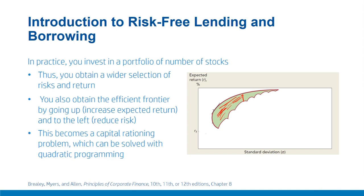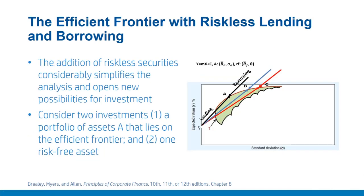In this feasible region, you want to go up to increase expected return for a given level of risk, or go left to decrease risk for a given level of return. This gives you the efficient frontier — the best set of portfolios offering optimum combinations of risk and return. Mathematically, you need quadratic programming with a capital constraint such as sum of XI = 1, maximizing return for a given level of risk. Addition of riskless securities can considerably simplify this analysis.